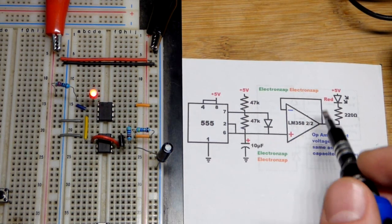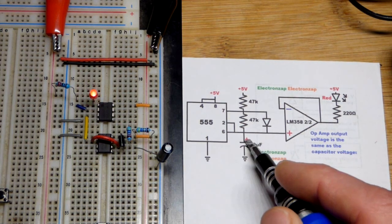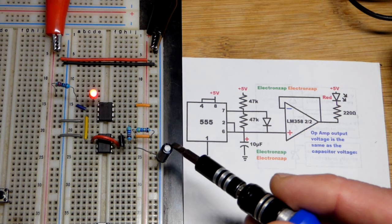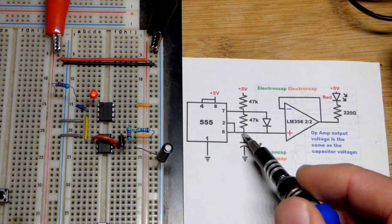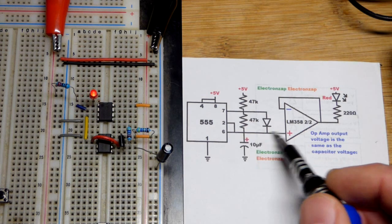We are taking the voltage of the capacitor here, the 10 microfarad capacitor which goes between one third down to one third and up to two thirds supply voltage.